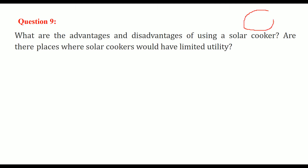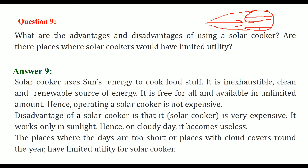Looking at the globe, sunlight comes directly to the equatorial regions, but at the poles and mostly above those areas there is very little sunlight — those are areas where solar cookers would have limited use. Solar cookers use sun energy to cook food. Solar energy is inexhaustible, clean, and renewable, and it is free for all and available in abundance.